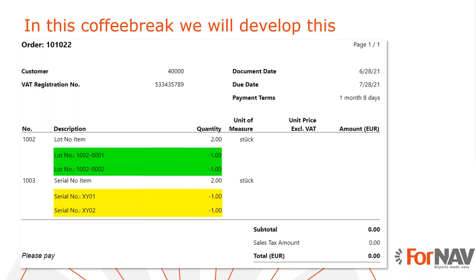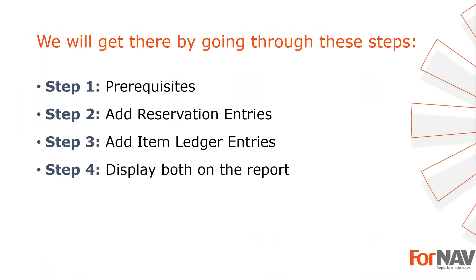Today, we'll be getting lot and serial numbers on both unposted and posted entries. We will demonstrate this with the order confirmation report, since that may contain both. To demonstrate adding lot and serial numbers, I'm going to use these steps. Prerequisites — what do I need to get going? In step two, I will set up the data item for the reservation entries. In step three, I will set up the data items for the item ledger entries. And in step four, I will display them both seamlessly in the report. Let's start with the first step.